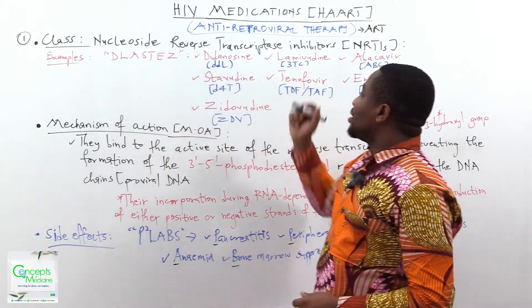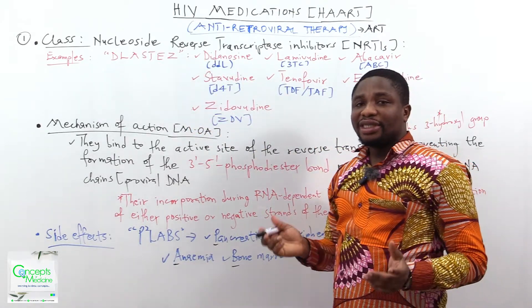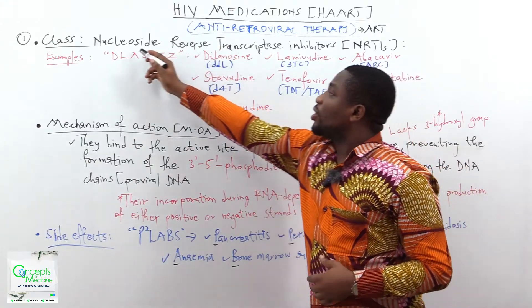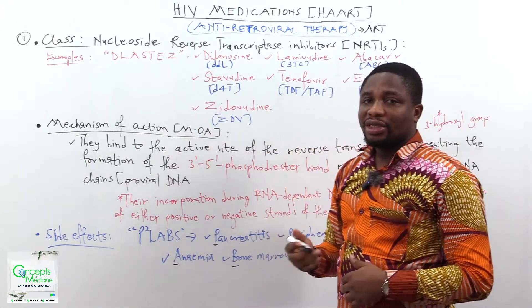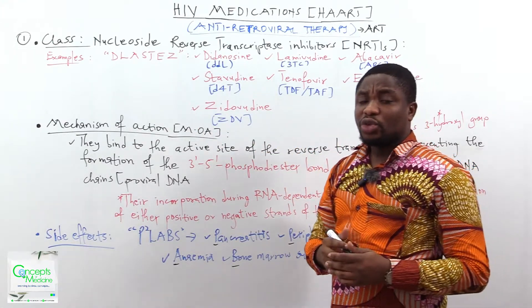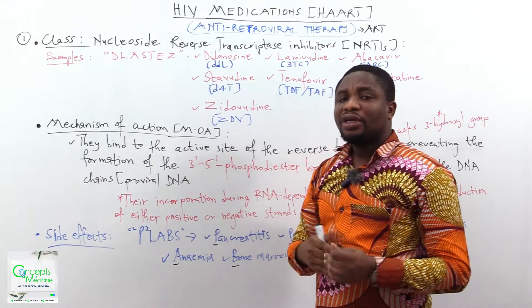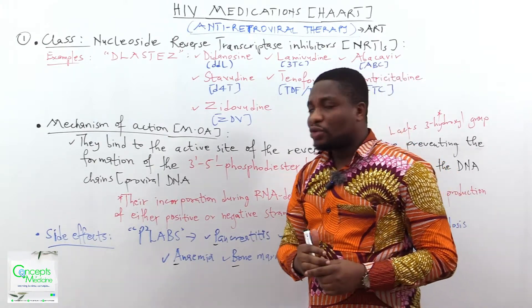The first class is the nucleoside reverse transcriptase inhibitors. We can also replace 'nucleoside' with 'nucleotide.' The key distinction is that a nucleotide will have the phosphate group, while a nucleoside will lack the phosphate group.